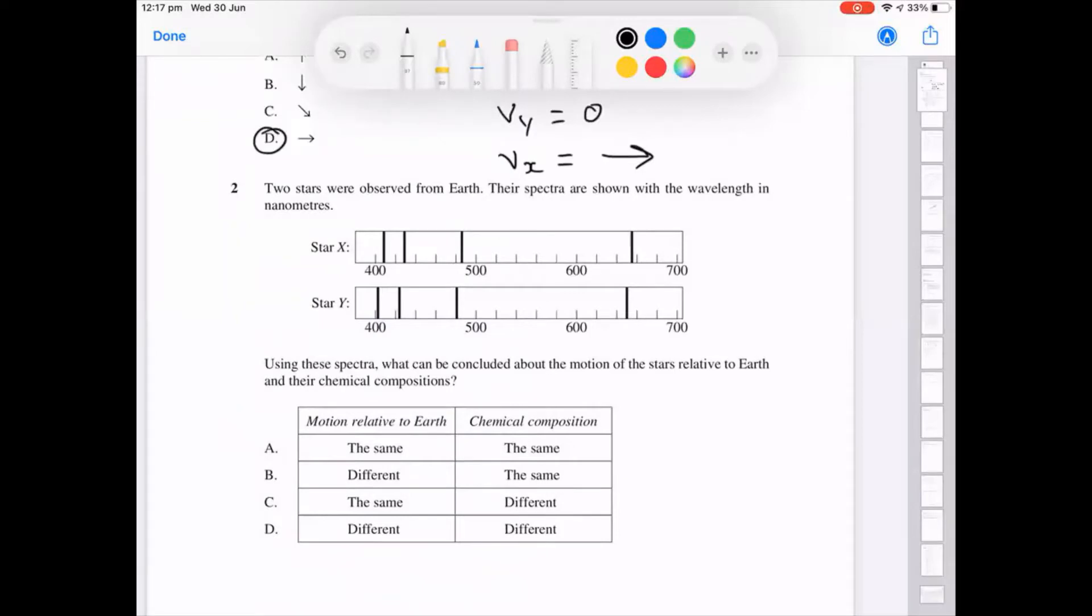So when we're looking at this we've got two spectra of two different stars. The degree of red shifting and blue shifting will tell us the relative motion of the star relative to Earth. So we can see that these have been red shifted.